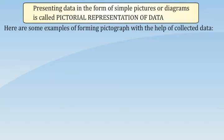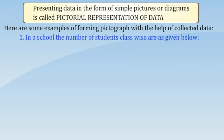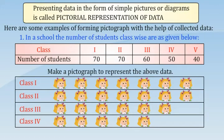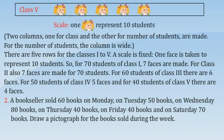Here are some examples of forming pictographs with the help of collected data. In a school, the number of students class-wise are as given below. Make a pictograph to represent the above data. Scale: one student symbol represents 10 students. Two columns are made — one for class and the other for number of students. The column for number of students is wide. There are five rows for classes 1 to 5, and a scale is fixed.